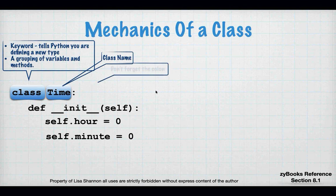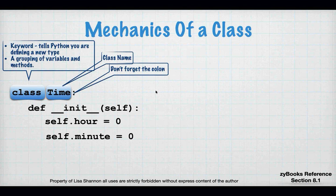Class names follow the same kind of rules that variable names do — you can't just name a class whatever you want. Then we have the colon. Up until now, we've used the colon in code blocks — after a function definition line, after an if statement. Well, a class is in fact a block of code; it's just a bigger block of code that encompasses more things.